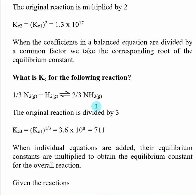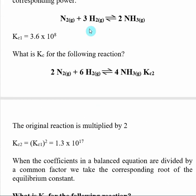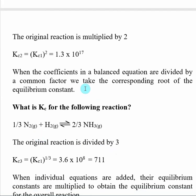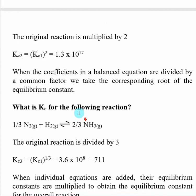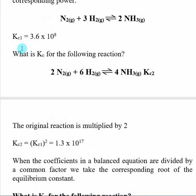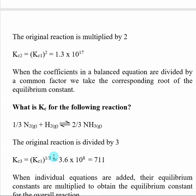Similarly, if I take my original reaction and divide it by a number, we take the corresponding root. So if I take this original reaction and divide by 3 — so 3 divided by 3 gives H2, or 2/3 NH3 — I've divided that original reaction by 3. I then take KC1 and take the corresponding root: if I divided by 3, I take the cube root; if I divided by 2, it would be the square root. So this new KC3, where I divided the original reaction by 3, is the cube root of KC1, which equals 711.